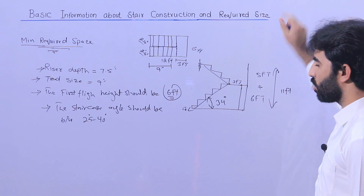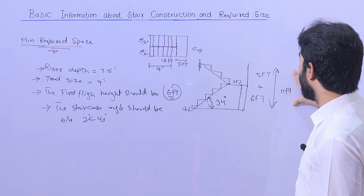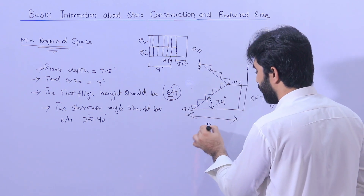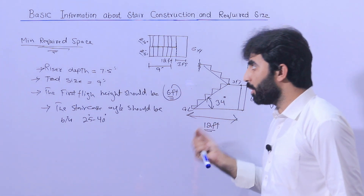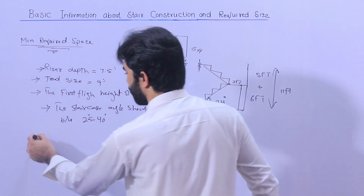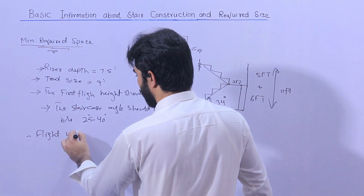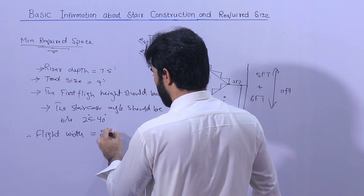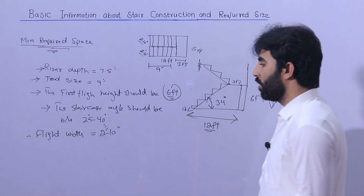These are the required space dimensions according to minimum requirements. With this given data you can go up to about 11 feet floor height. As discussed, the minimum space should be 6 feet by 12 feet — if you have less than this you will face problems. Keep the minimum required space: 6 feet width, 12 feet length, and each flight width is 2 feet and 10 inches.